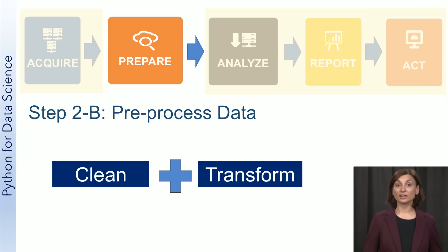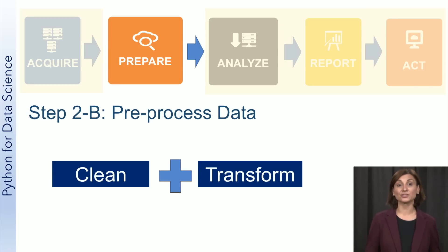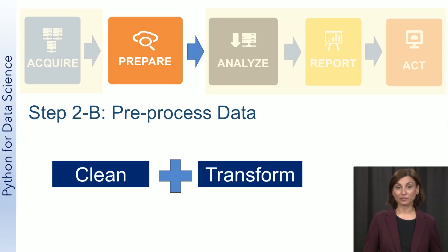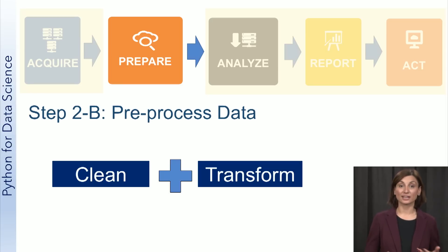The raw data that you get directly from your sources are never in the format that you need to perform analysis on. There are two main goals in the data preprocessing step. The first is to clean the data to address data quality issues. The second is to transform the data to make it suitable for analysis.